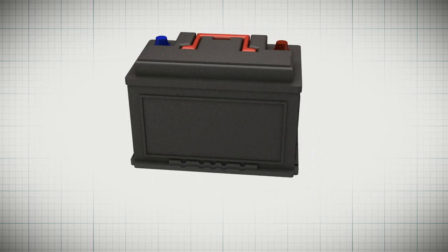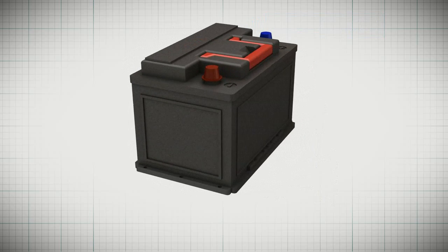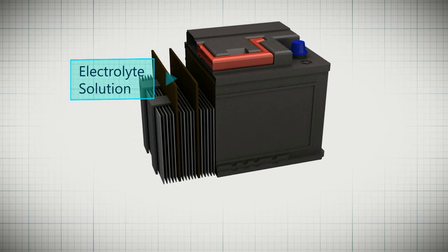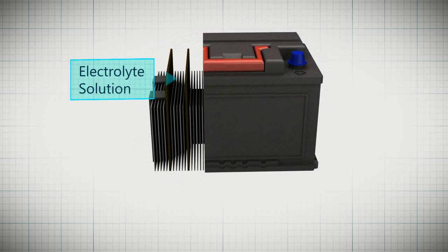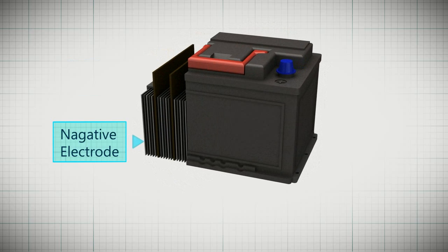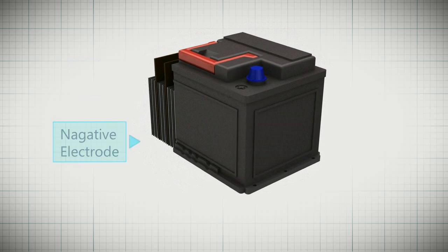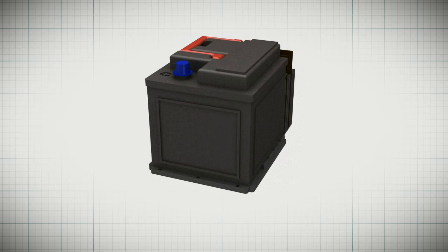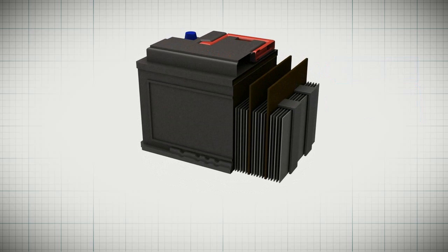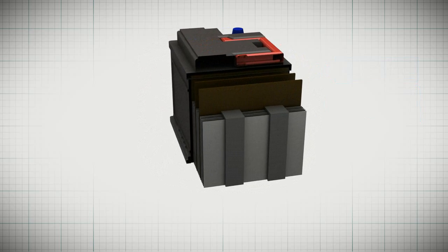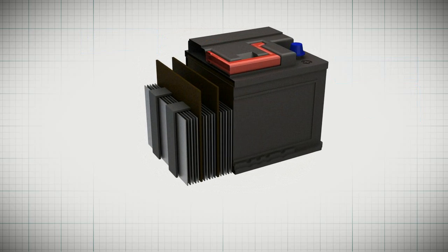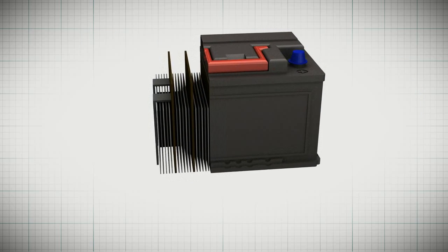The battery is made up of a positive and a negative terminal. The inside of the battery is filled with electrolyte solution like dilute sulphuric acid. There are cells in the battery containing negative electrodes made of lead and positive electrodes. There are cell dividers and cell connectors surrounding the cells, and vent caps on top of the battery. All the inner parts are enclosed by a protective casing.